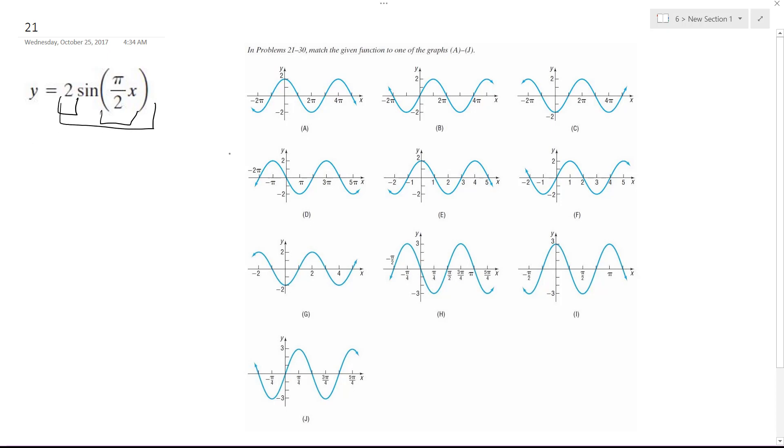This is a sine graph so it's going to start off at the origin (0,0), so something like this. The period is 2π divided by omega.